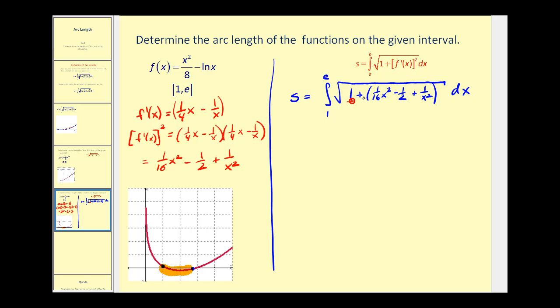Let's go ahead and combine the like terms. We have a one and then a minus one-half. So we'll have one-sixteenth x squared plus one-half plus one over x squared.